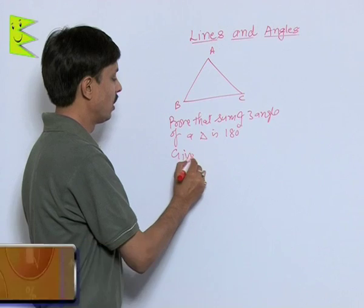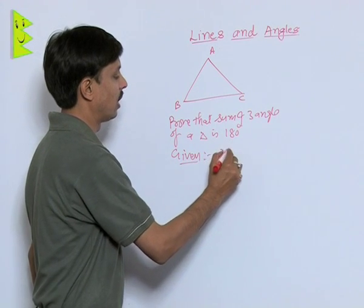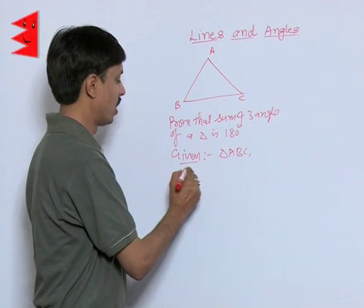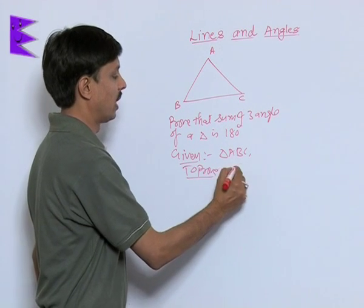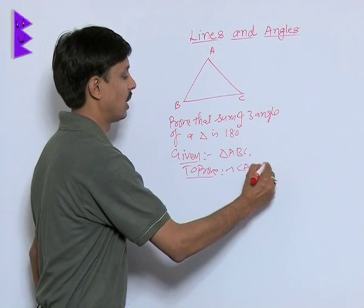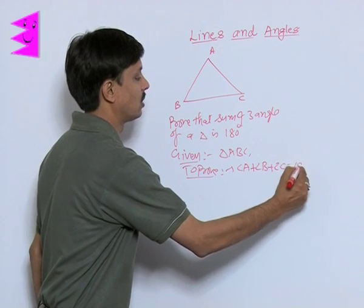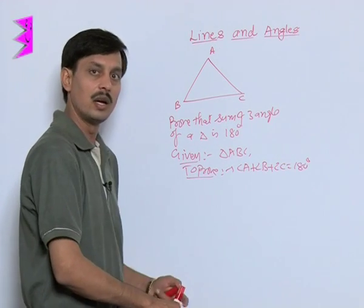What is given here? Given is triangle ABC. What we want to prove here? We want to prove that angle A plus angle B plus angle C is 180 degrees.